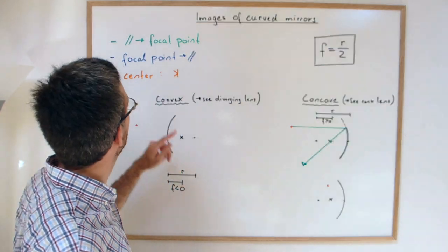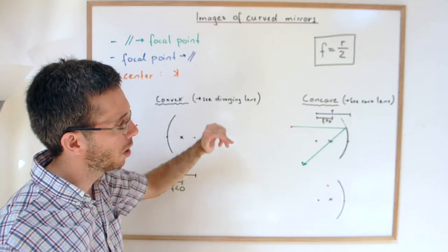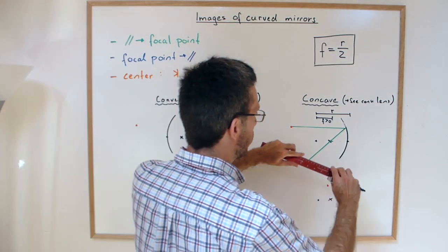The second special ray is the one that goes through the focal point. That one becomes parallel. It's kind of the inverse of what we just did.